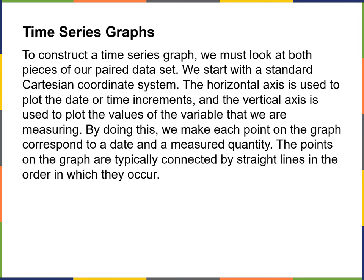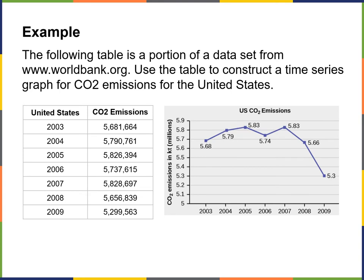Time series graphs. To construct a time series graph, we must look at both pieces of a paired data set. We start with a standard Cartesian coordinate system. The horizontal axis is used to plot the date or time increments, and the vertical axis is used to plot the values of the variable we're measuring. Each point on the graph corresponds to a date and measured quantity, and points are typically connected by straight lines in the order in which they occur.